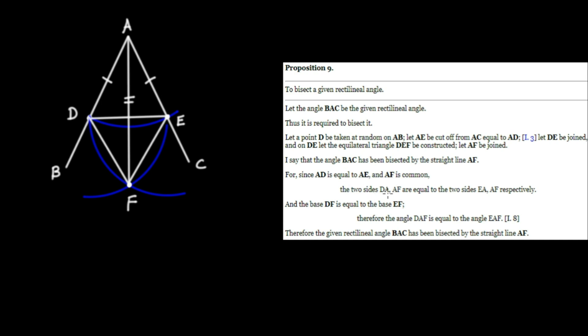The two sides DA and AF are equal to the two sides EA and AF, respectively. Let's review that. DA is equal to EA. That's right. AF is, of course, equal to AF.